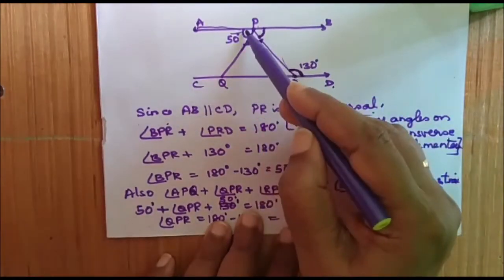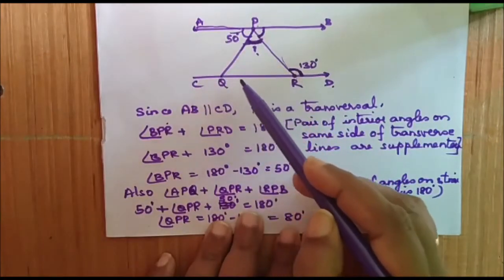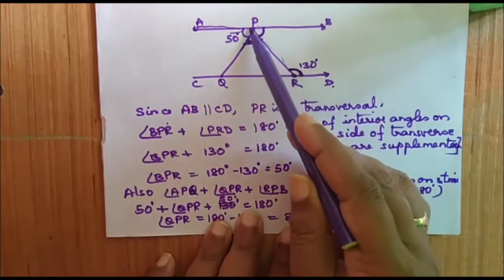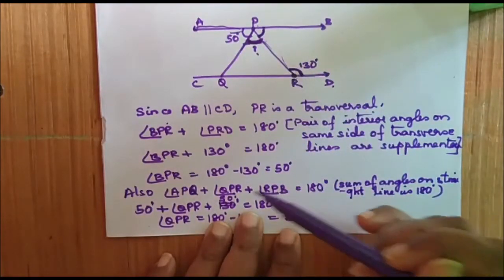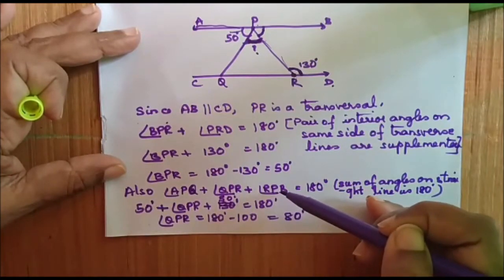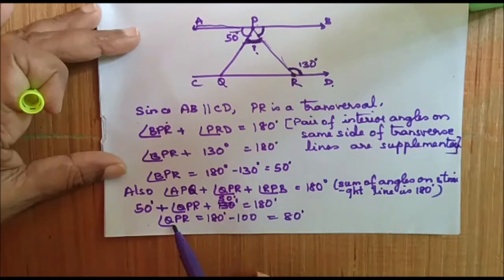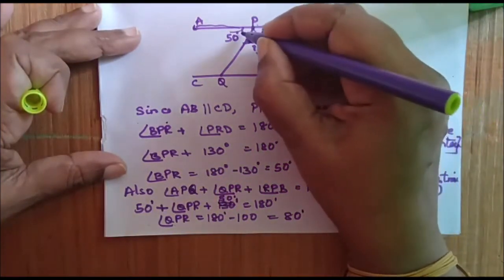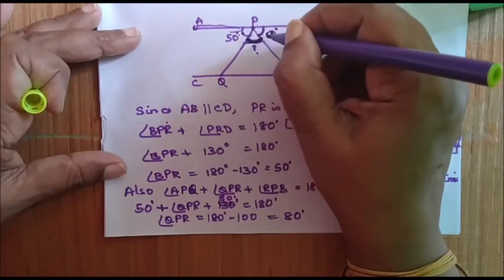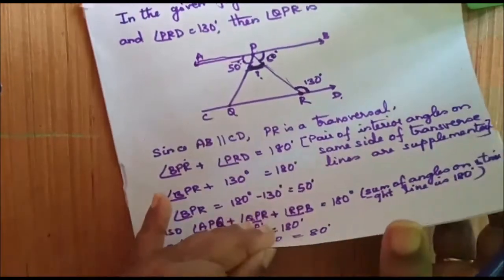Now, if we add all three angles on the straight line: angle APQ plus angle QPR plus angle RPB equals 180 degrees. We know APQ is 50 degrees and RPB is 50 degrees. So angle QPR equals 180 minus 100, which equals 80 degrees.